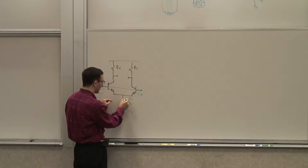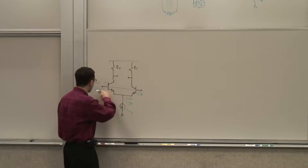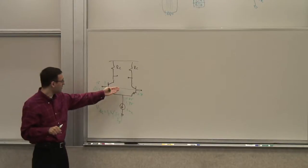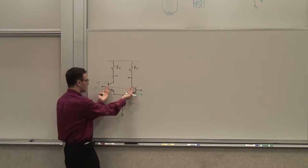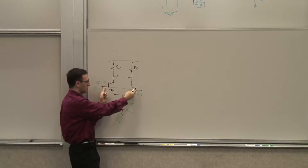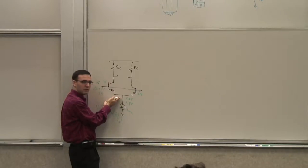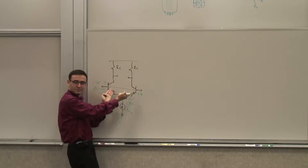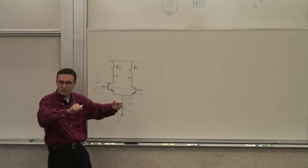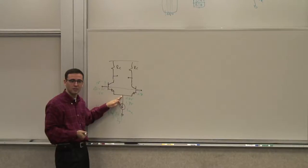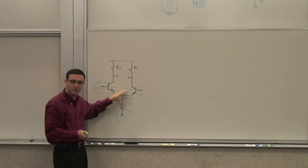Instead of being at 0.3 volts, you get 1.3 volts. If I start moving this up and down, this node will track it perfectly. From the input perspective, you can take these transistors and put them in parallel, because these two nodes are shared. So this is nothing but an ideal follower — for as long as they move together, it's just a follower. So this node does move; it's not an individual ground.